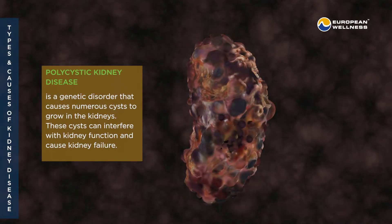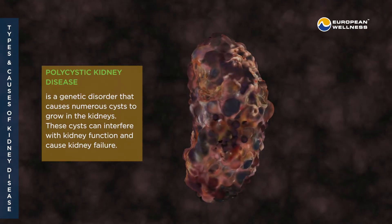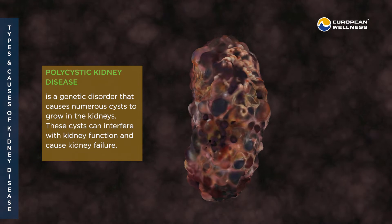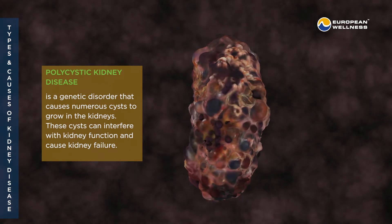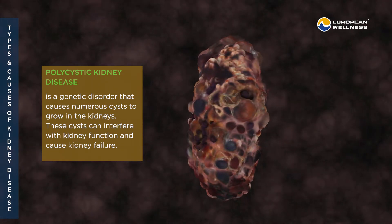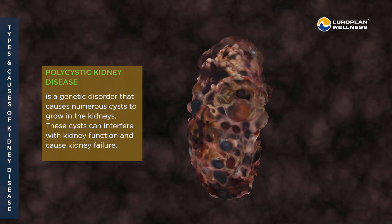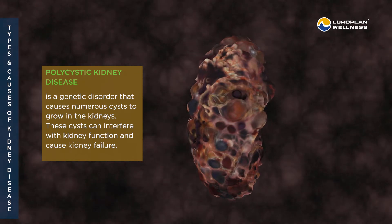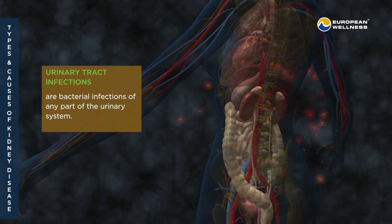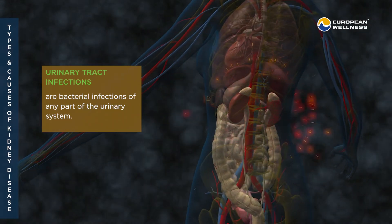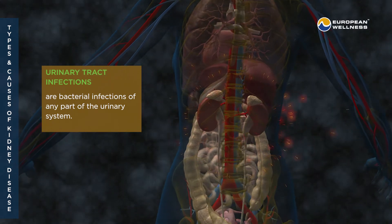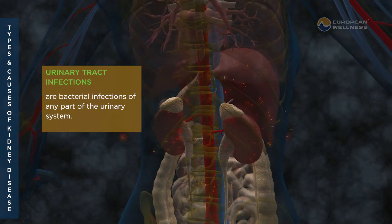Polycystic kidney disease is a genetic disorder that causes numerous cysts — small sacs of fluid — to grow in the kidneys. These cysts can interfere with kidney function and cause kidney failure. Urinary tract infections are bacterial infections of any part of the urinary system.